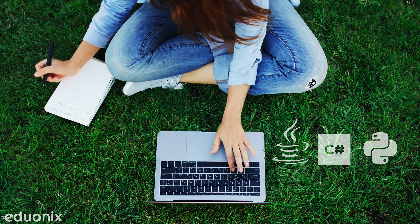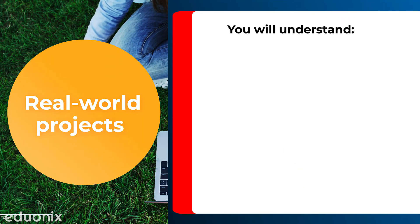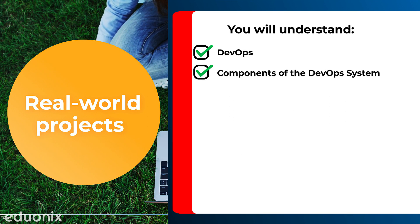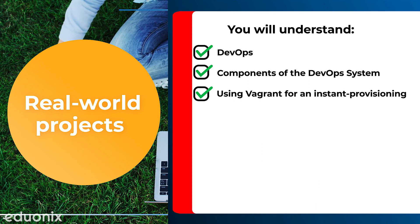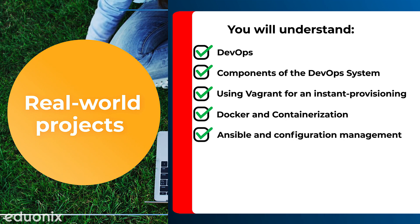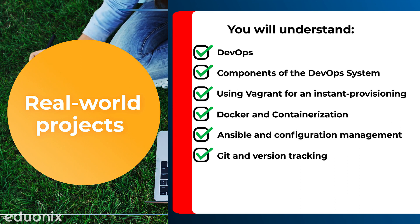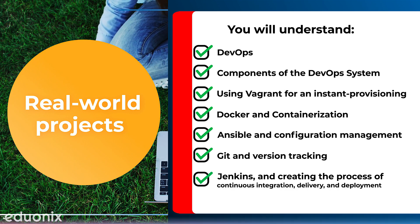By the time you finish this course, you will have a thorough understanding of: 1) DevOps, 2) components of the DevOps system, 3) using Vagrant for instant provisioning, 4) Docker and containerization, 5) Ansible and configuration management, 6) Git and version tracking, and 7) Jenkins and creating the process of continuous integration, delivery, and deployment.